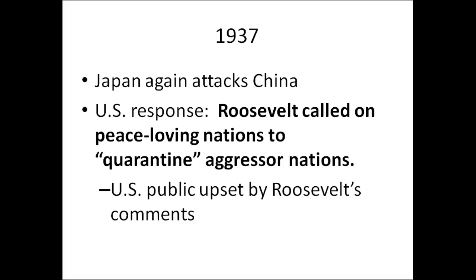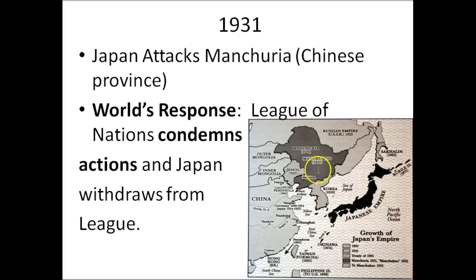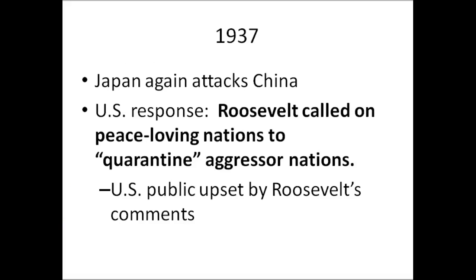In 1937, Japan attacks further into China, first having attacked Manchuria and then attacking further into the area around Peking, today's Beijing. The US responds by calling on all peace-loving nations to quarantine the aggressor nations, but the American public is upset by Roosevelt's comments because they are very isolationist. The League of Nations does nothing because Japan is no longer a member and the League has no say in what goes on — showing how ineffective the League of Nations really was.